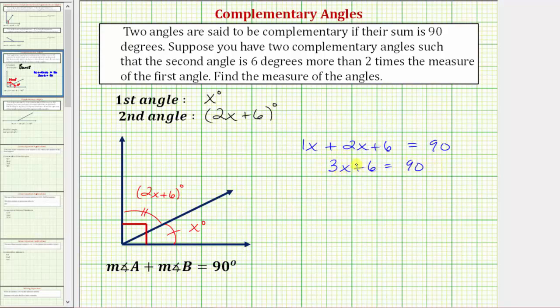Next step, we isolate the variable term by undoing the plus six, and therefore we subtract six on both sides. Simplifying, subtracting six undoes plus six, or six minus six is zero. So we have three x equals ninety minus six equals eighty four.